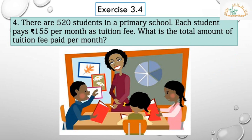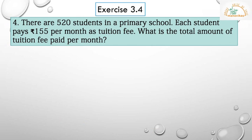Question 4: There are 520 students in a primary school. Each student pays rupees 155 per month as tuition fee. What is the total amount of tuition fee paid per month? Every child pays rupees 155 per month and we have to find the total amount of tuition fee paid per month. Here also we are multiplying to get the answer.